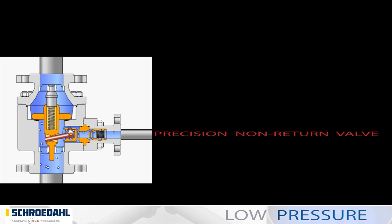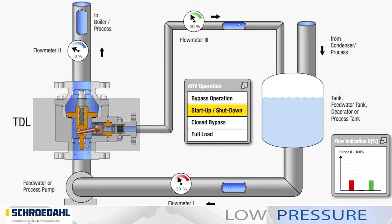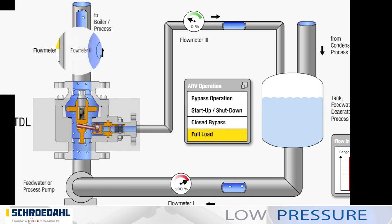Using forged steel in the design enables a significantly higher nominal pressure to be achieved than with the SUL. The animation shows clearly how the check valve is lifted by the increased flow rate during startup and shutdown process, and how the medium is released to the process. The lever automatically adjusts and opens the bypass precisely at planned flow rates. When the bypass is fully closed, the entire flow rate is fed to the process.